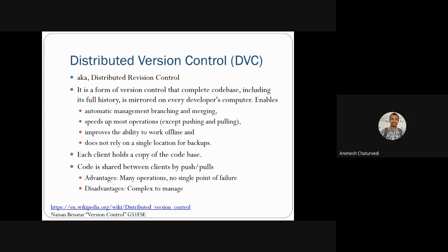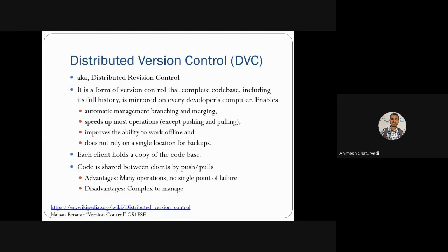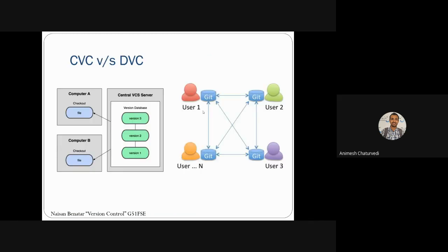The disadvantage of the distributed version control system is that it is complex to manage because there are too many operations and features. The centralized or distributed server must be intelligent enough to replicate properly and not harm the code base.